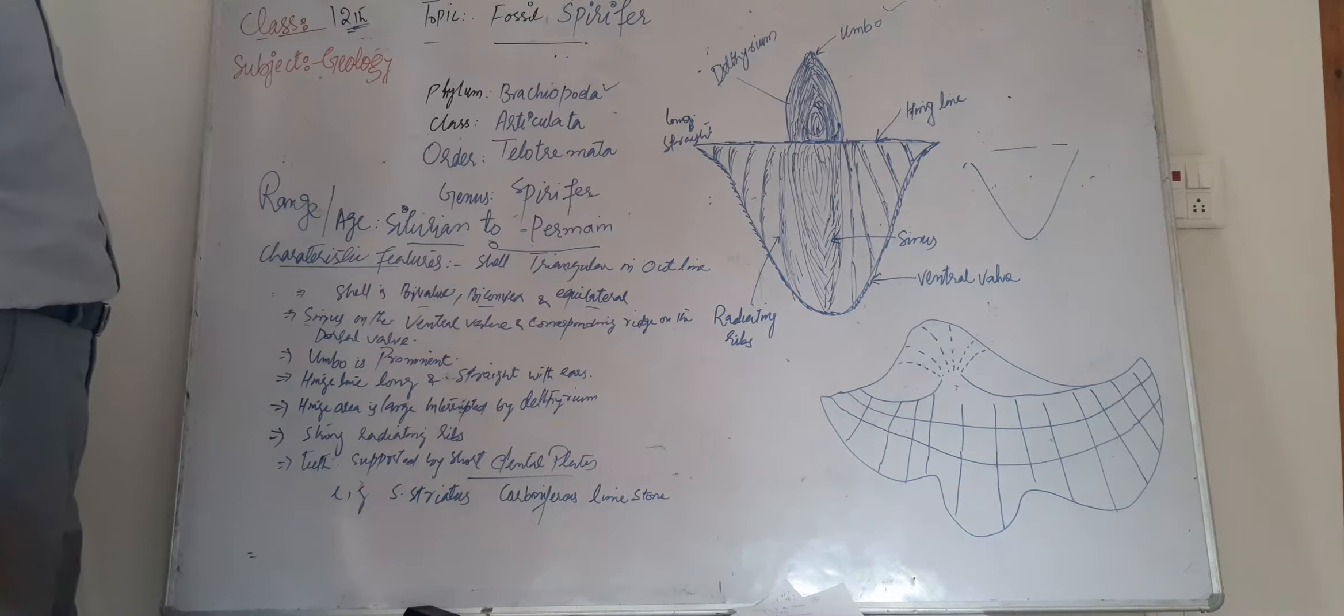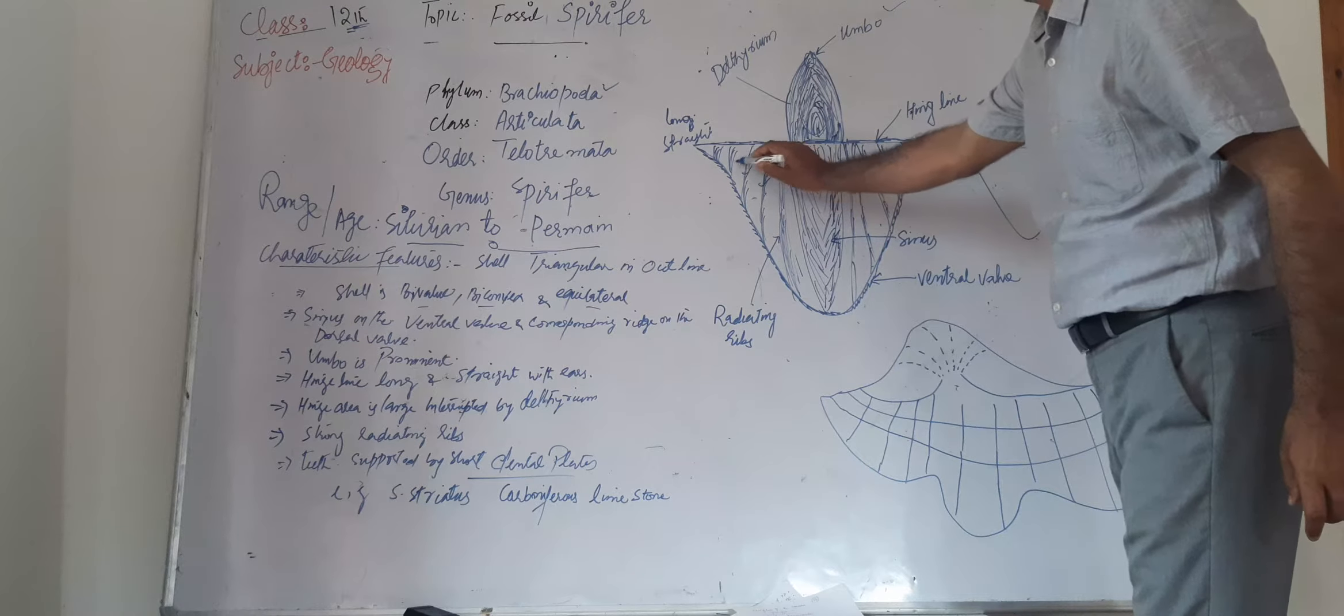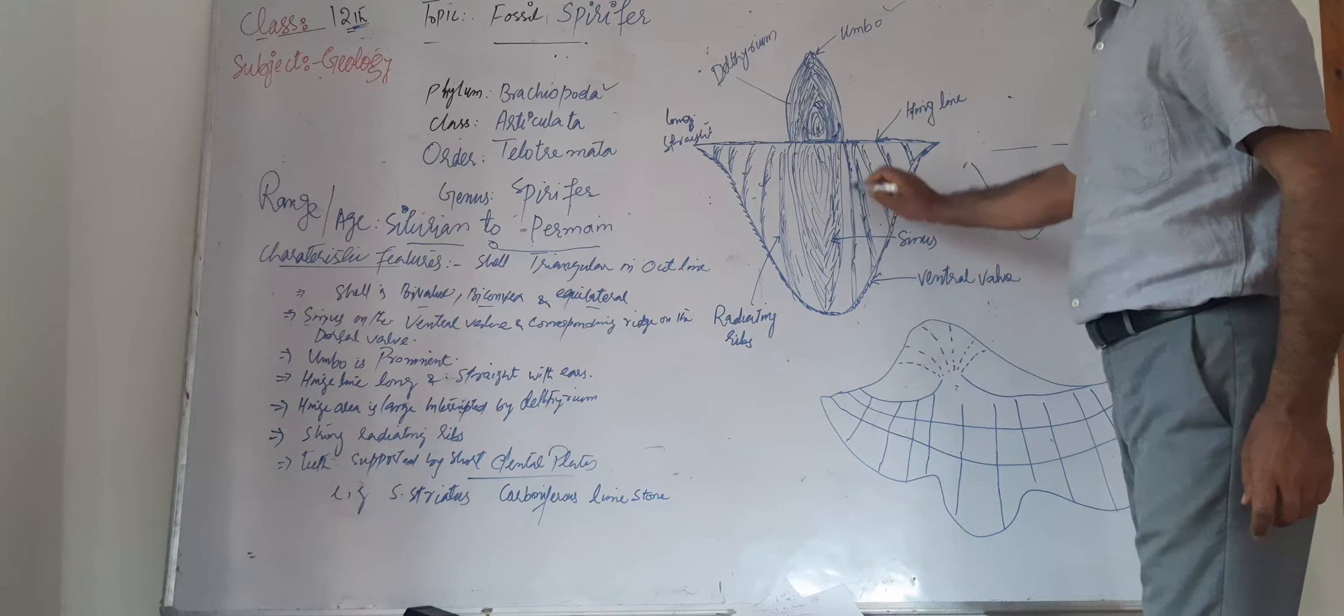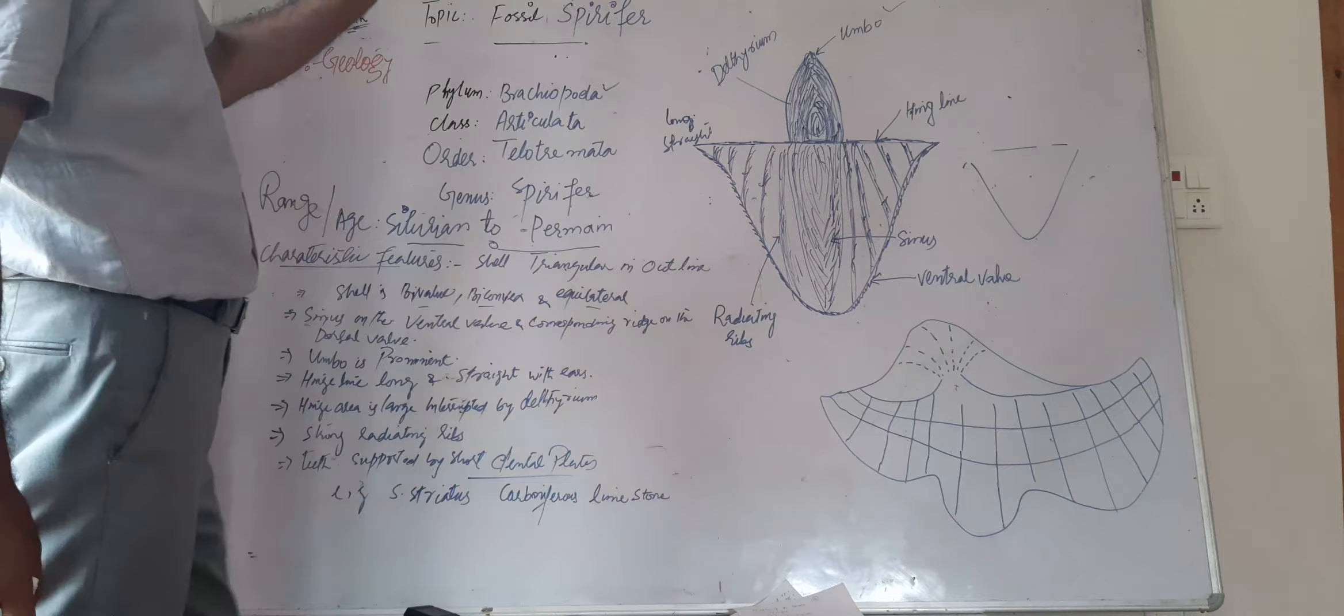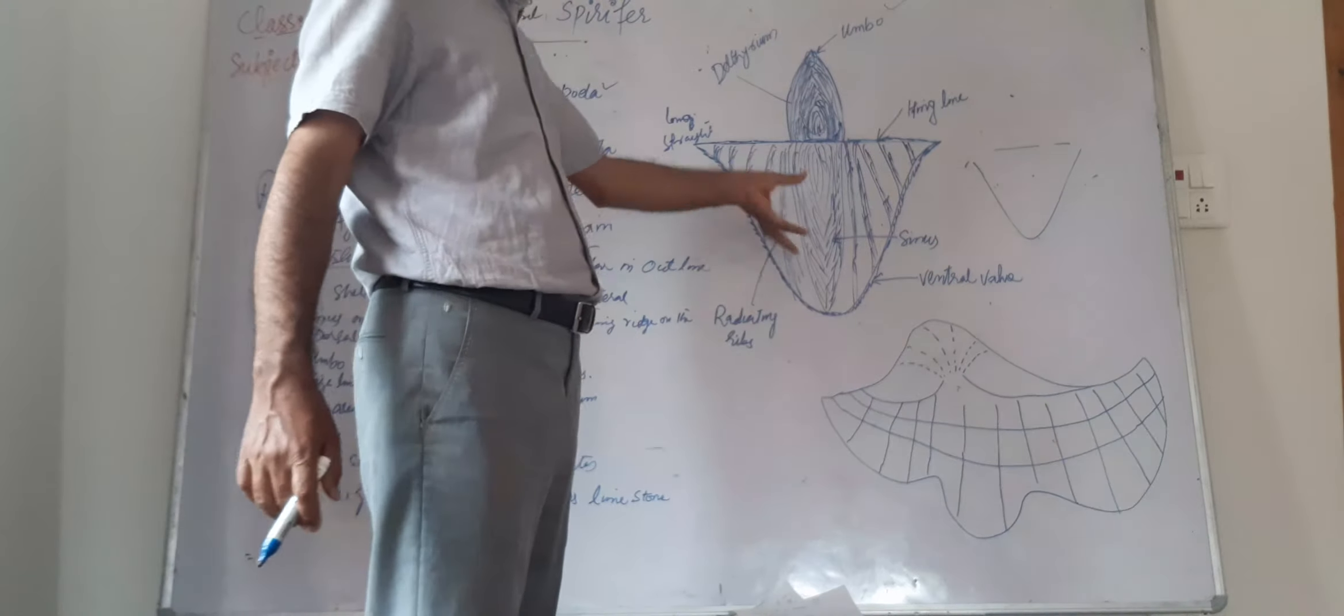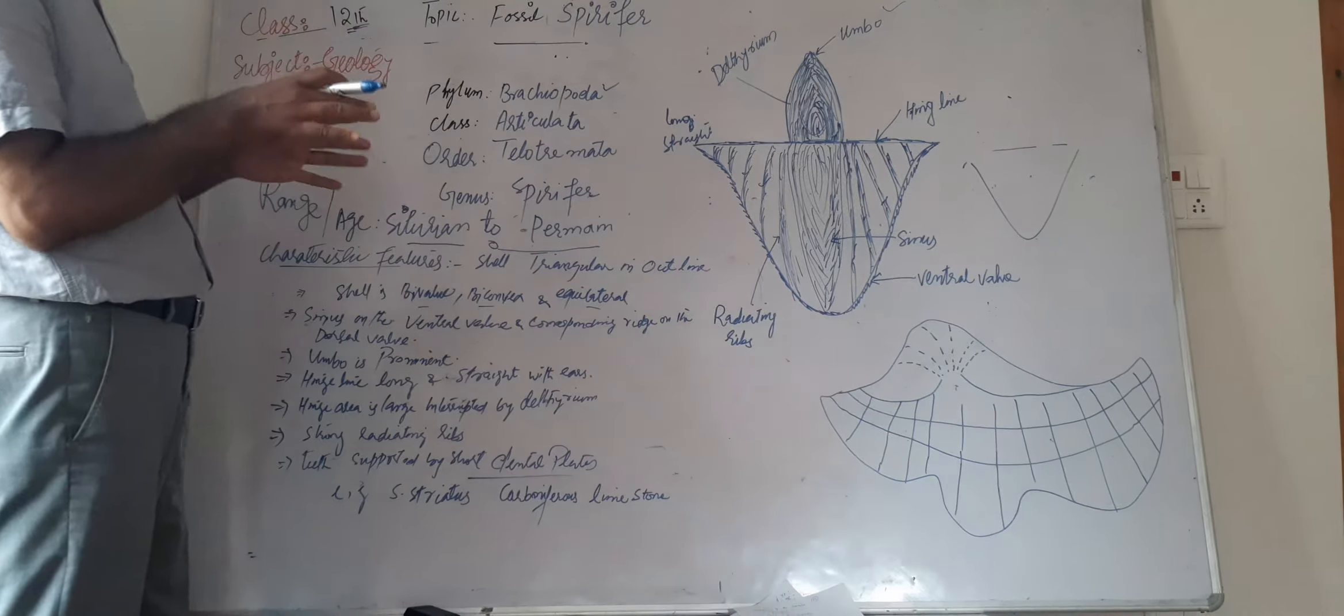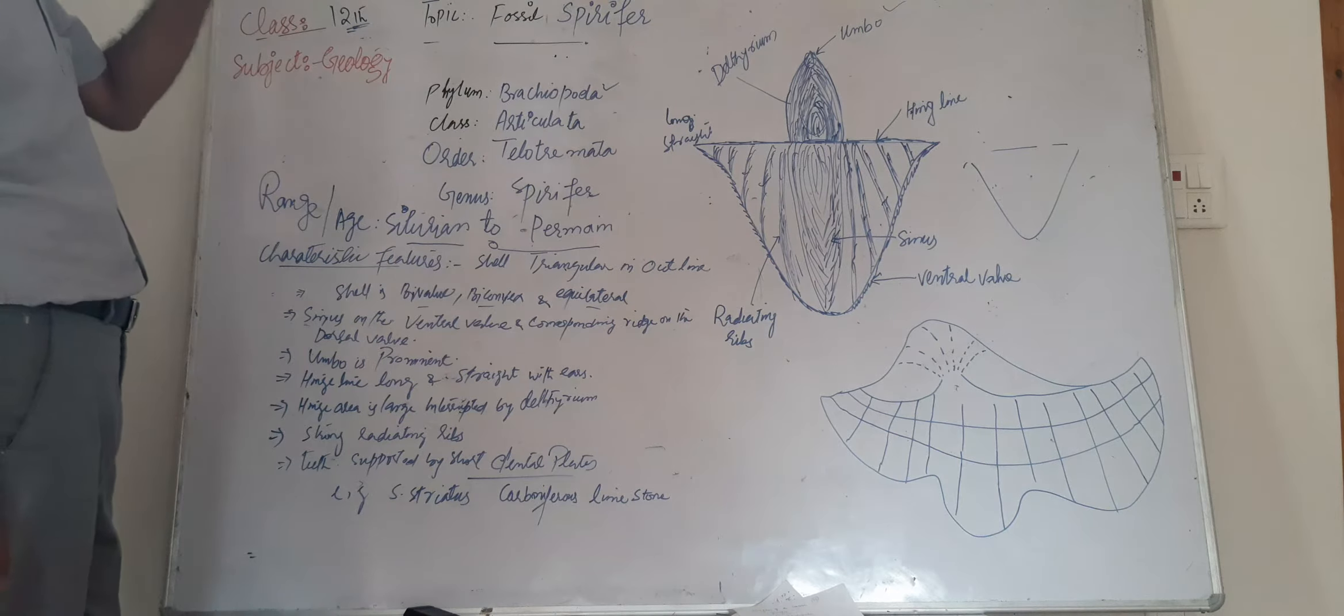The strong radiating ribs - you see these are the strong radiating ribs. When you try to touch this shell, you see that these radiating ribs, or we can say the surface of this shell, has ornamental strong radiating ribs. That means the ribs are visible or we can say these ribs we feel when we see this. So biconvex shell.